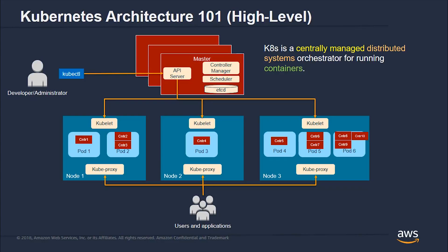First, Kubernetes is a distributed system, which means it allows you to run your applications on a pool of hardware resources available from several individual servers and hosts that are joined into a cluster. Here you can see we have a cluster of three hosts — node one, node two, and node three — and all of those are connected to what is called a master node on top.